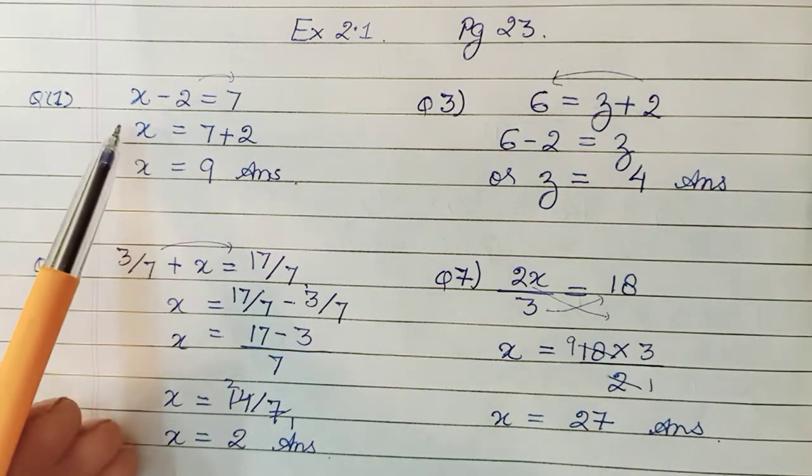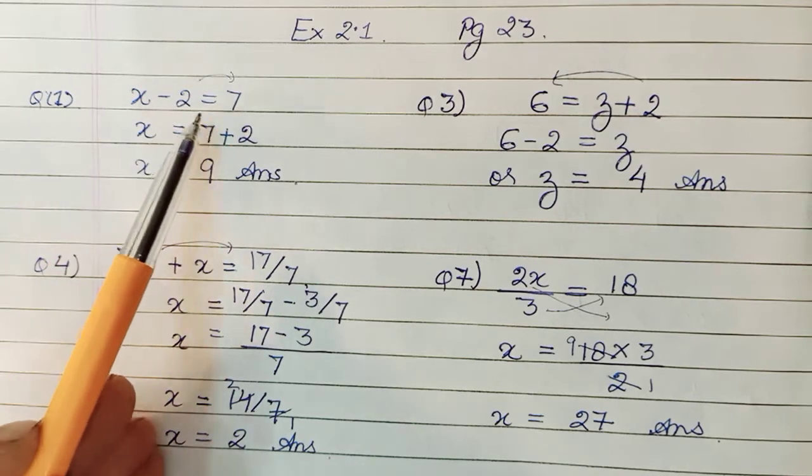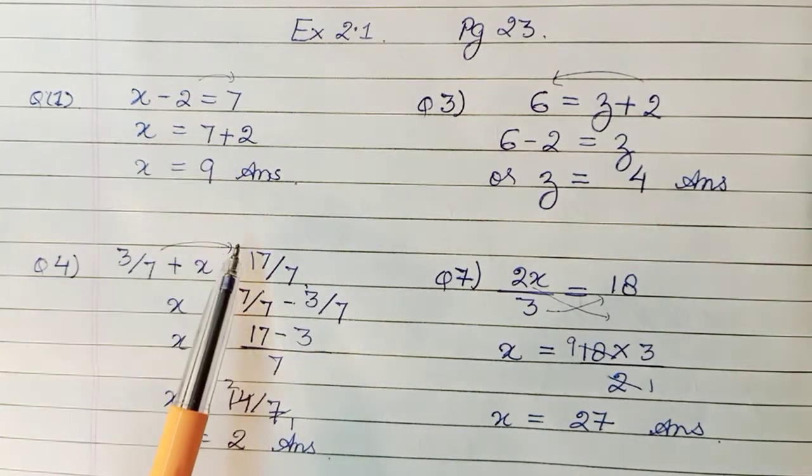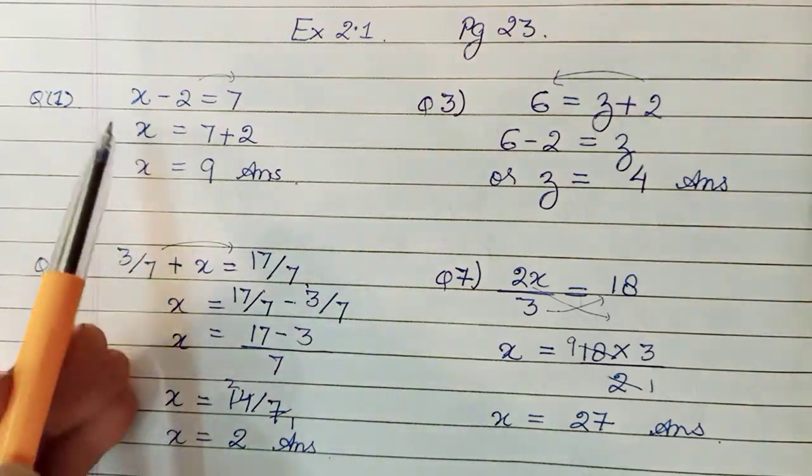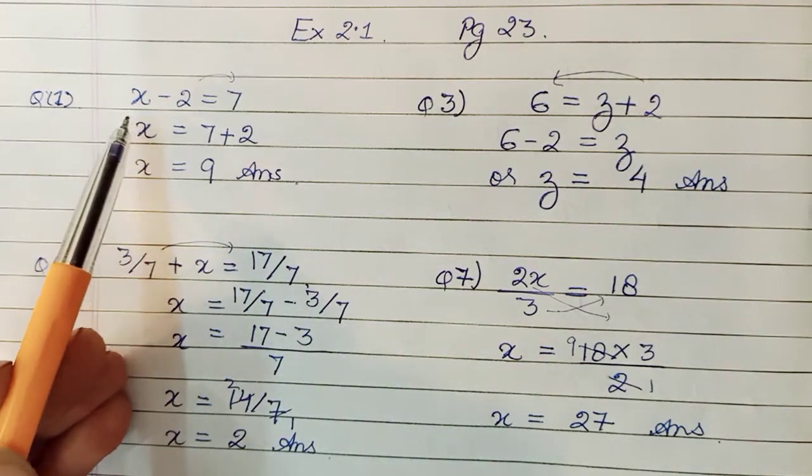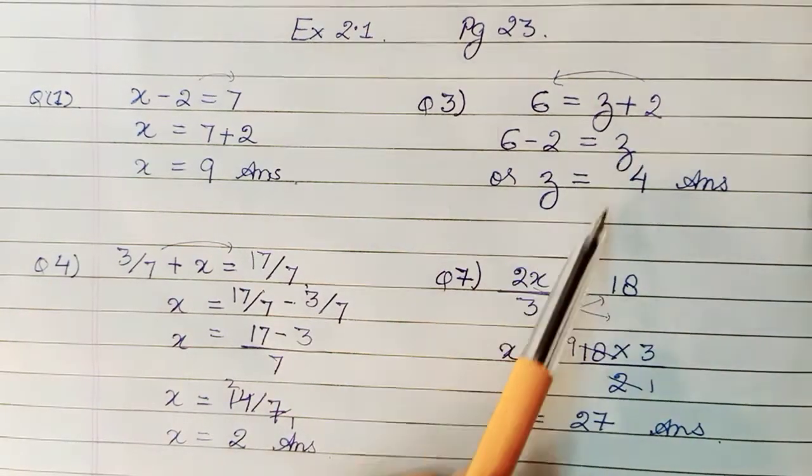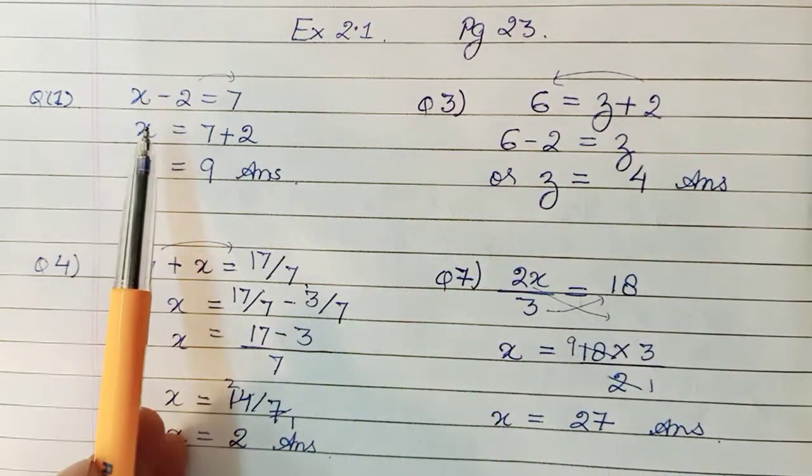The first question as you see here is x minus 2 equals 7. The key to all these questions or solving means finding your value of the variable, unknown variable here, like it is x here, can be any other variable.